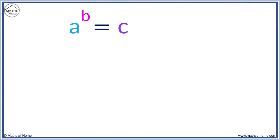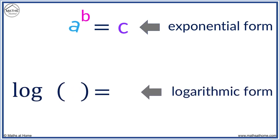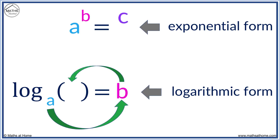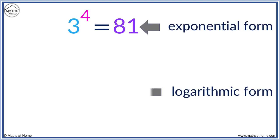Here we have a to the power of b equals c. We can write a general rule using the same spiral pattern: a is the base, b goes here as the exponent, and c goes here. We can use this rule to write any exponential as a logarithm. a to the power of b equals c is written as log base a of c equals b.